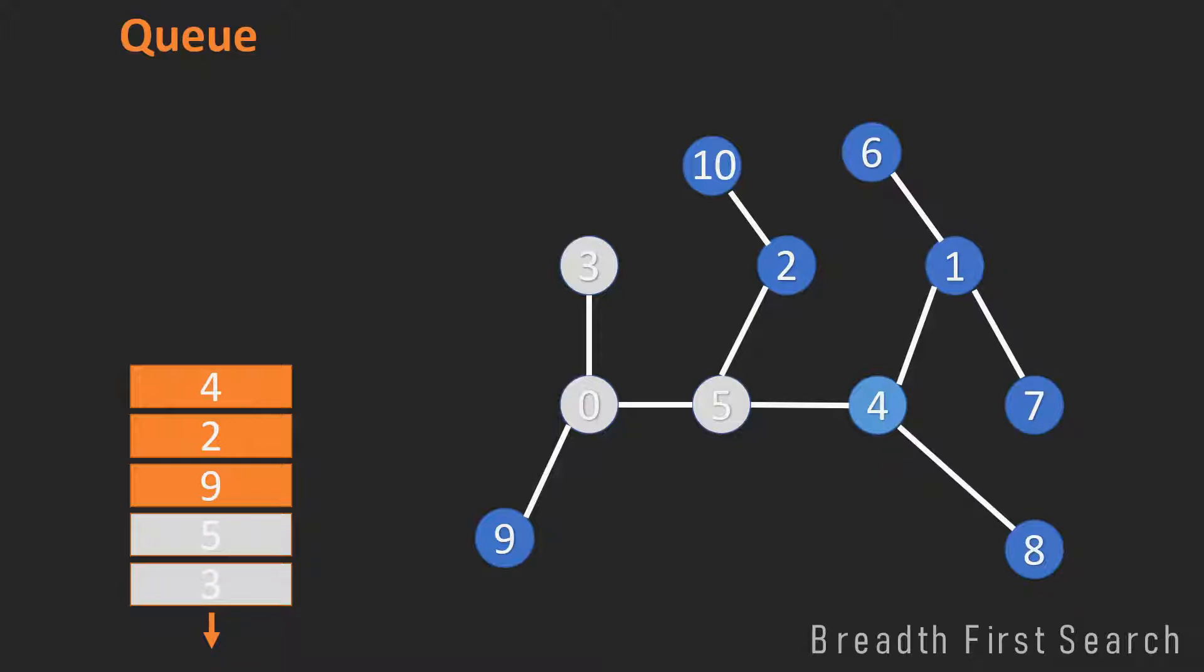Which leaves us with 9 as the first element in the queue. So we visit 9, look at all unvisited neighbors of the 9, there are none, so in this iteration nothing happens.